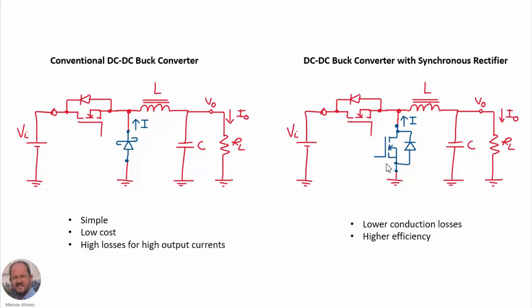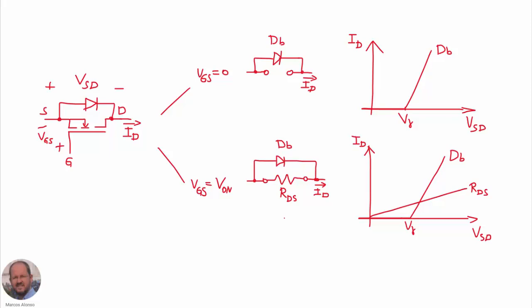Let's investigate first the behavior of the MOSFET used as a synchronous rectifier. Here we have the picture of the MOSFET, and we can see that we are considering the current through the MOSFET coming out of the drain. So we have two paths for the current to circulate between the source and the drain: it can go through the body diode, but also it can circulate through the channel of the transistor. If we apply zero voltage between gate and source, then the channel is going to be off, so the only path for the current is through the body diode. The characteristic of drain current versus source-drain voltage corresponds to just the characteristic of the body diode, which is not very interesting for real applications.